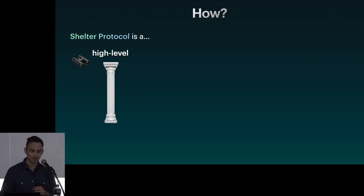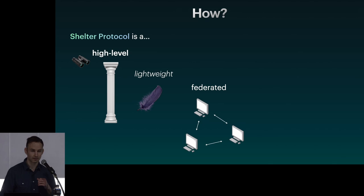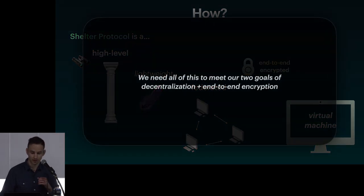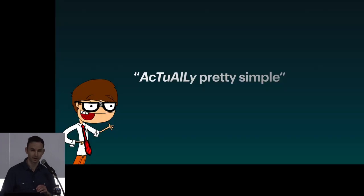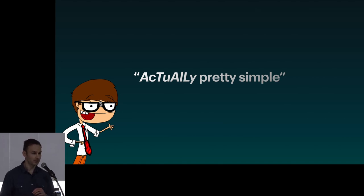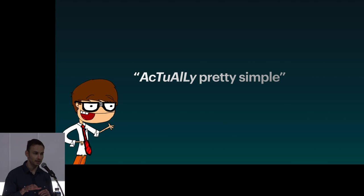Shelter Protocol is a high-level, lightweight, federated, end-to-end encrypted virtual machine. We need all of this in order to meet our two requirements of decentralization and end-to-end encryption. And you can say that it's pretty simple — conceptually, it is. If you stick around for the entire talk, I pretty much guarantee you'll understand the basics of how Shelter Protocol works and be able to explain it to a friend.